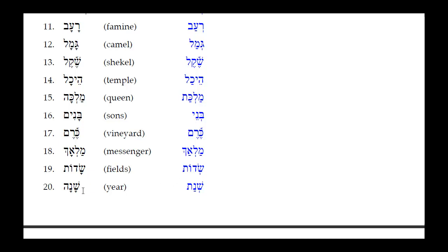Number eighteen: Shana — for year. This has a Kamets He feminine ending. The He drops out, the Tav takes its place, the Kamets reduces to a Patak, and the Kamets under the Shin in the open unaccented syllable reduces to a simple Sheva. Result: Shanat.